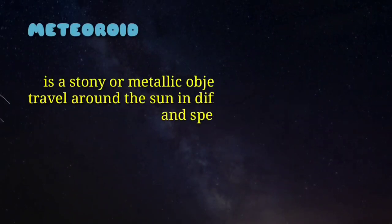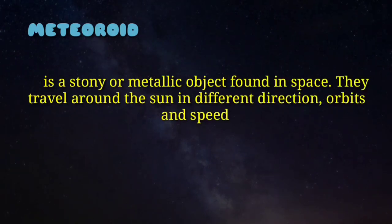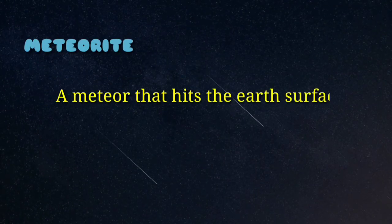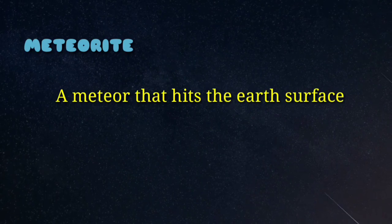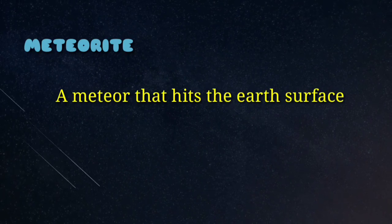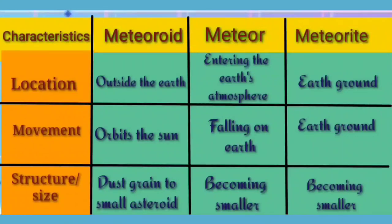A meteoroid is a stony or metallic object found in space. They travel around the Sun in different directions, orbits, and speeds. A meteorite is a meteor that hits the Earth's surface. Let us study the location, movement, and structure of a meteoroid, meteor, and meteorite.